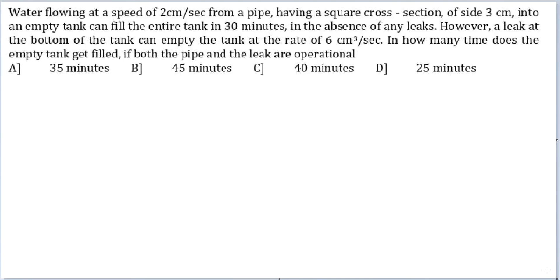Let's look at this question. Water flowing at the speed of 2 cm per second from a pipe, having a square cross section of side 3 cm into an empty tank can fill the entire tank in 30 minutes, in the absence of any leaks. However, a leak at the bottom of the tank can empty the tank at the rate of 6 cm³ per second. In how much time does the empty tank get filled if both pipe and leak are operational?